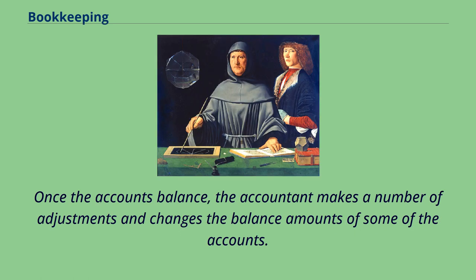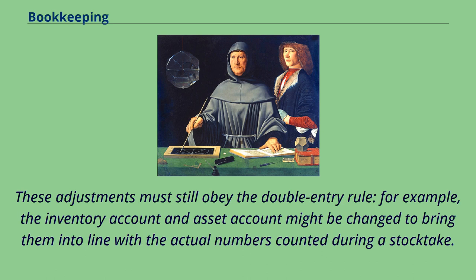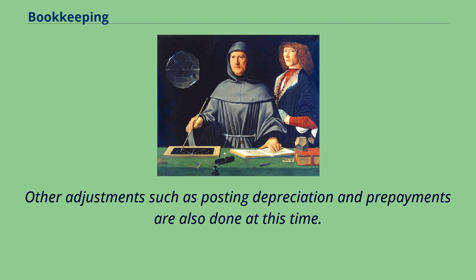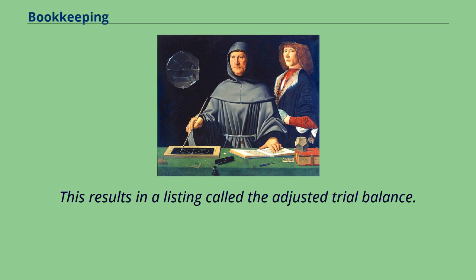Once the accounts balance, the accountant makes a number of adjustments and changes the balance amounts of some of the accounts. These adjustments must still obey the double-entry rule. For example, the inventory account and asset account might be changed to bring them into line with the actual numbers counted during a stock take. At the same time, the expense account associated with usage of inventory is adjusted by an equal and opposite amount. Other adjustments such as posting depreciation and prepayments are also done at this time.